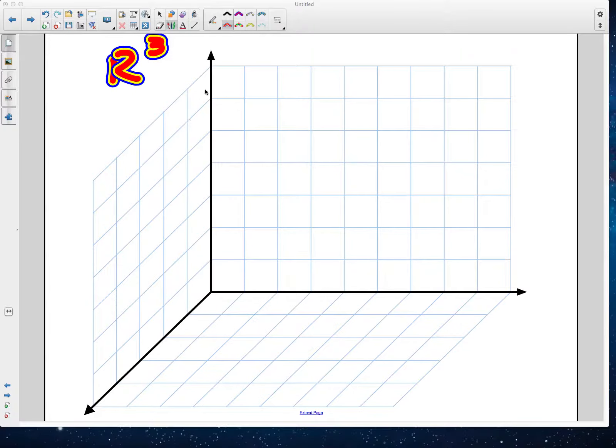So this is an example of an R3 grid, or a third dimension, which is essentially what we work with in real life.